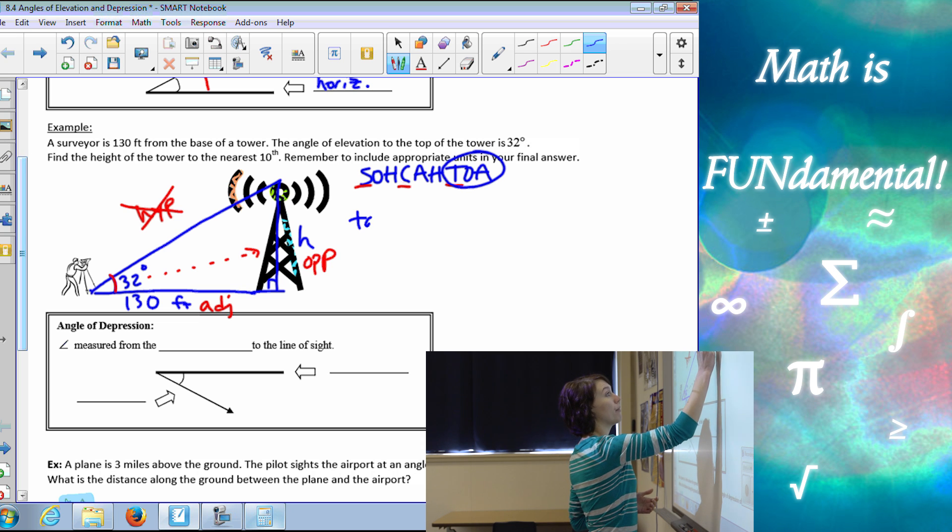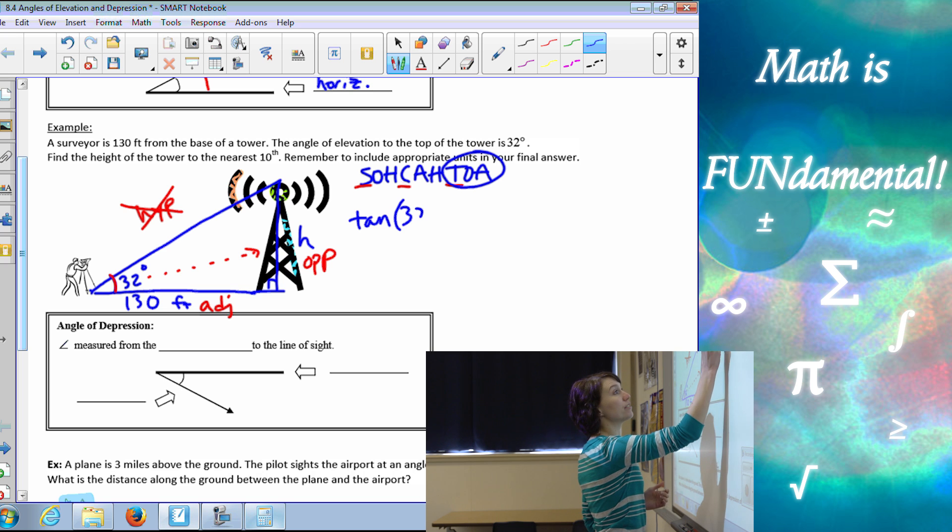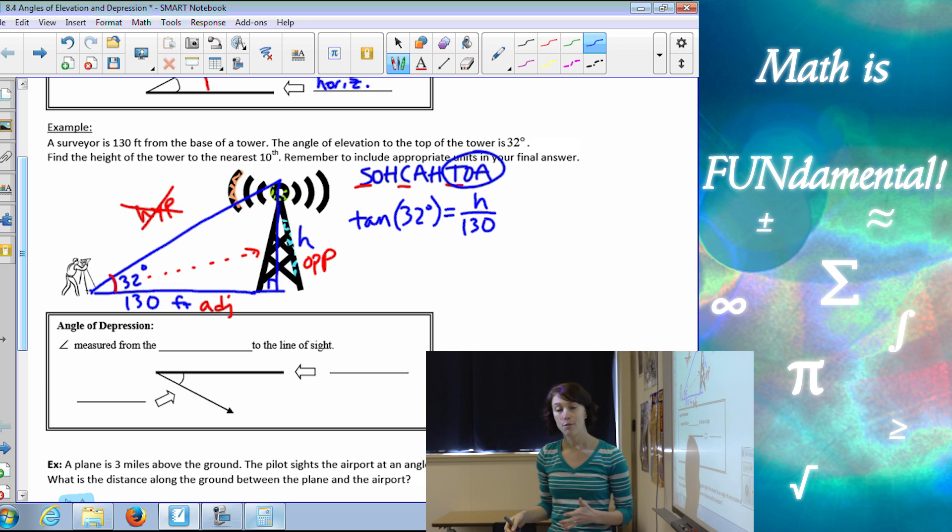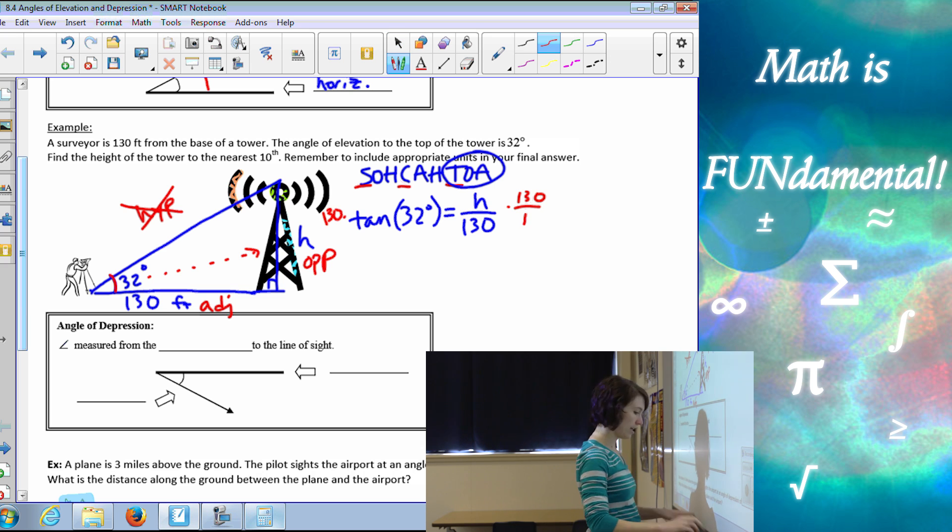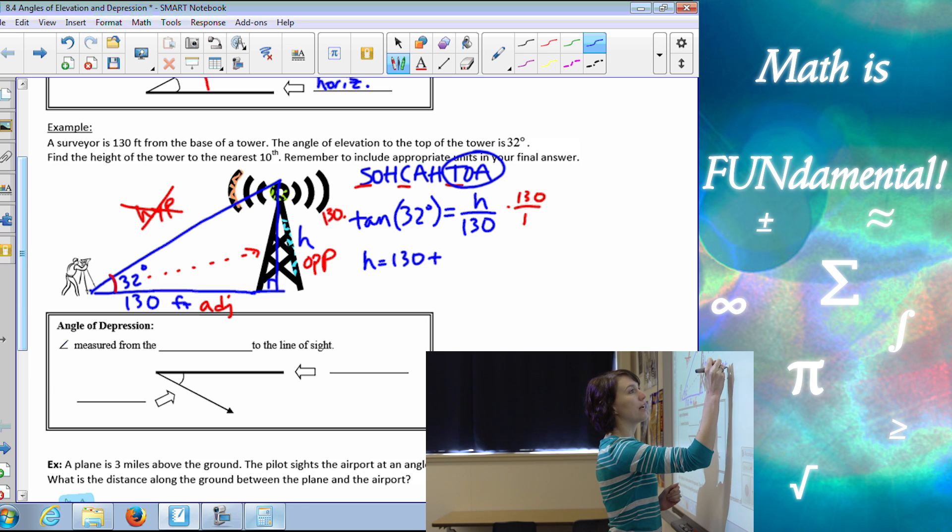So I'm going to set up my equation, tangent of our angle. Angle always goes here. Equals opposite, which is H, over adjacent, which is 130. Now we solve algebraically for H by multiplying both sides by 130. Alright, and I'll rewrite that. So H is 130 times the tangent of 32 degrees.